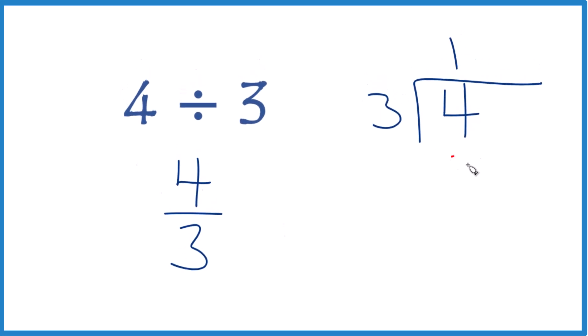Well, 1 times 3, that's 3. If we subtract, we'll get 1. 3 doesn't go into 1, but if we put a decimal point here, we can call this 10.